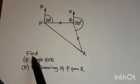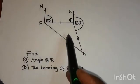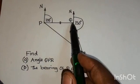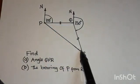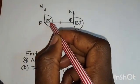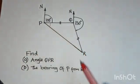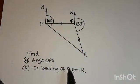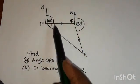The question says find angle QPR — this is the angle they want you to find. So how are we going to find this angle?